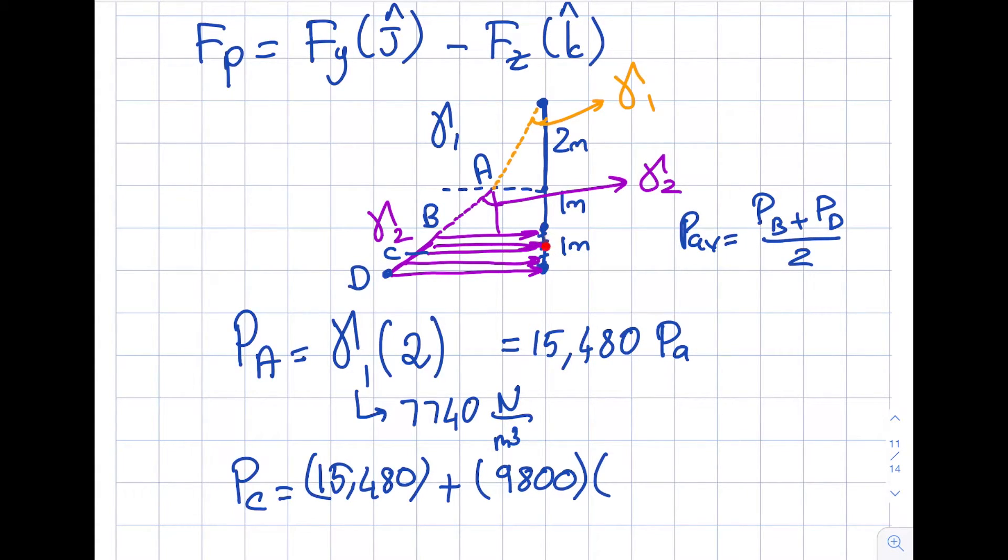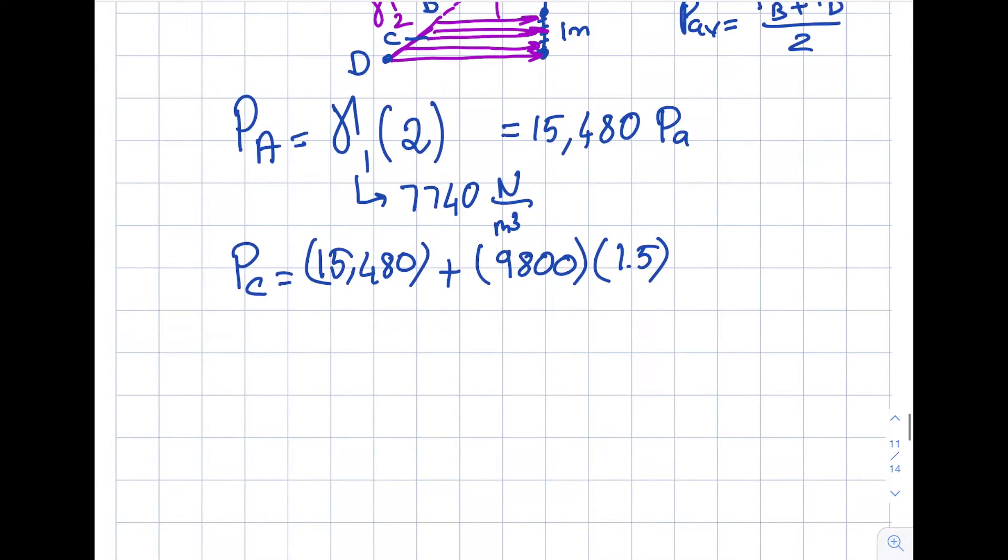So then this will be this value, 15,480, plus - now the slope is going to be whatever the specific weight of second one is, and this is water so it's going to be 9,800, and the distance that I go down here to here - the centroid will be right at the center of it, it's 0.5 - there's a 1 over here, so that will be 1.5. So now I need to put this into my calculator and I will get myself 30,180 pascals.